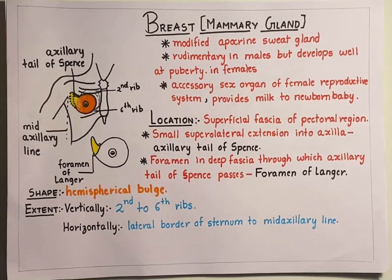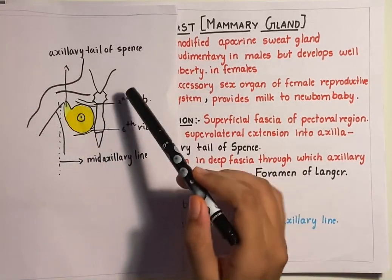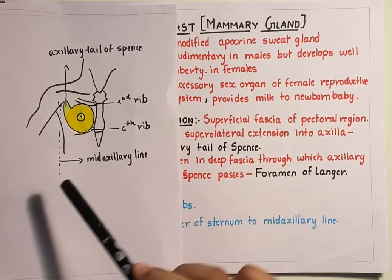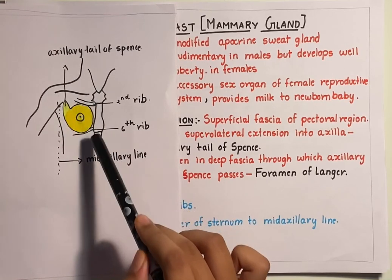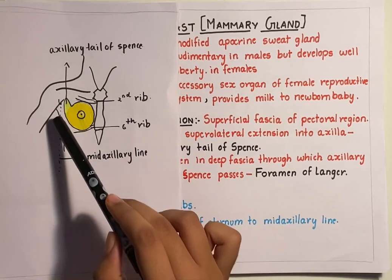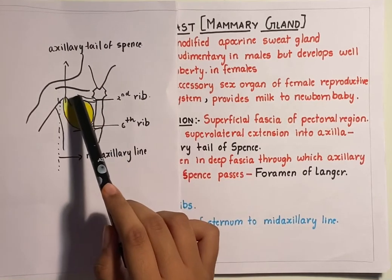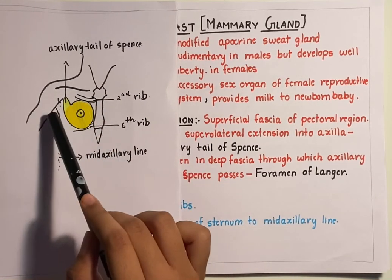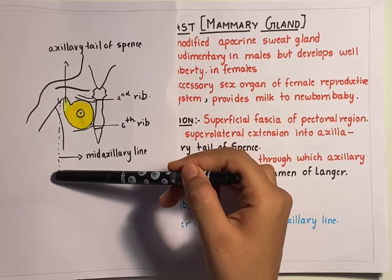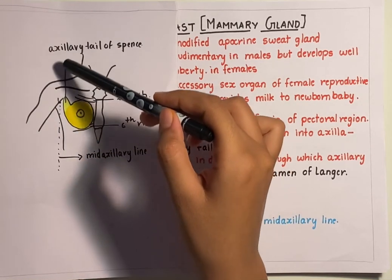Let us learn about the extent of the breast with the help of a diagram. As you can see in this diagram, here is the manubrium sternum, the body of the sternum and the xiphisternum. Here is the clavicle, the 2nd rib, the 6th rib, and here is the mid-axillary line. Now the breast extends vertically from the 2nd rib to the 6th rib, and horizontally from the lateral border of the sternum to the mid-axillary line.